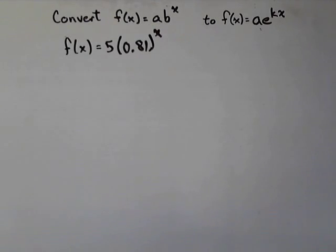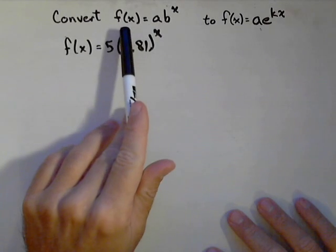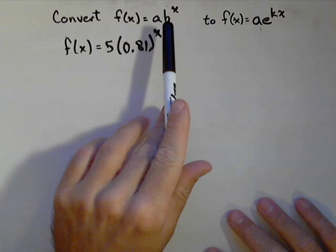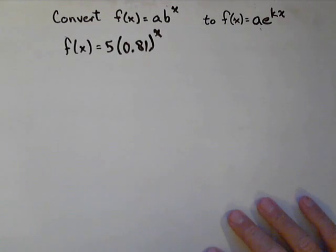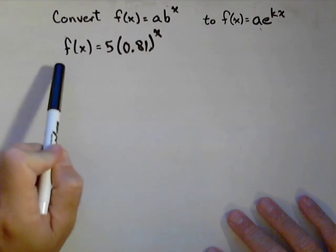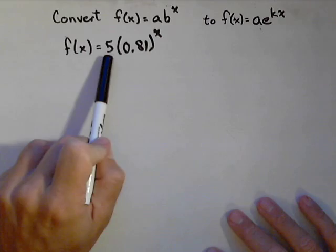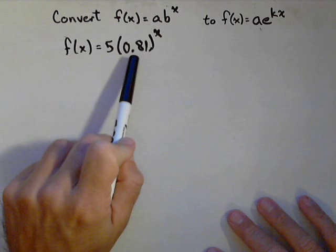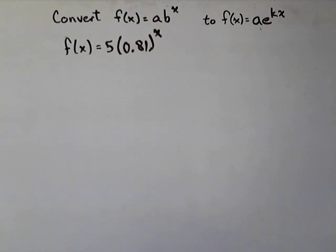In this video, we're going to talk about converting exponential forms from the form AB to the X to AE to the KX. We're given that f of X equals 5 times 0.81 to the X.